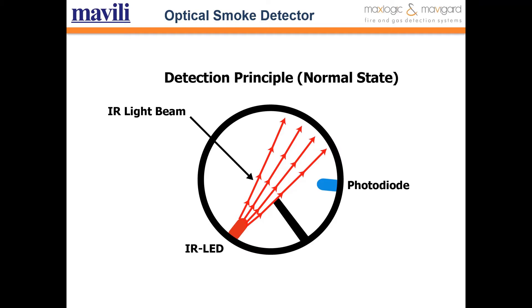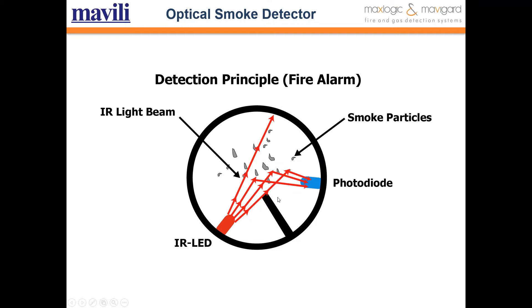Regarding the optical smoke detector detection principle: there is an IR LED transmitter. In normal conditions, the light does not reach the photodiode receiver. But in the case of fire, the inside of the smoke detector fills with smoke particles. The IR LED beam strikes the smoke particles, changes direction, and reaches the receiver. The detector then triggers the fire alarm signal.